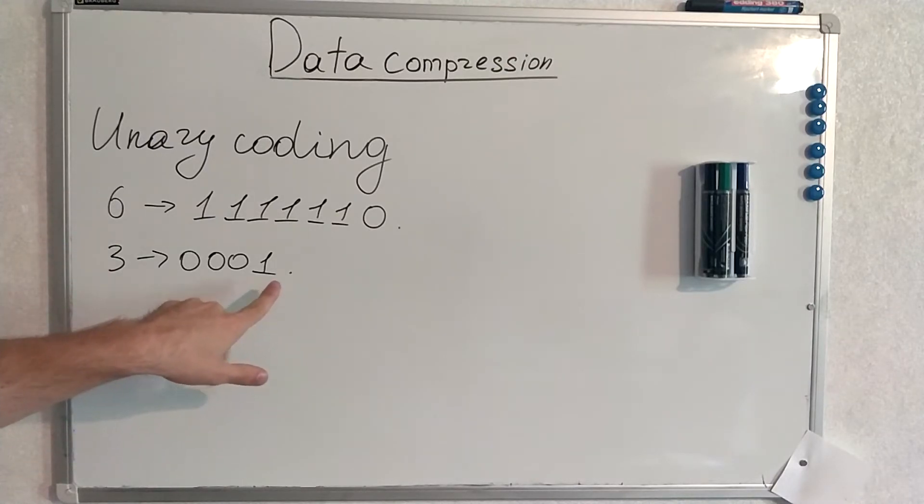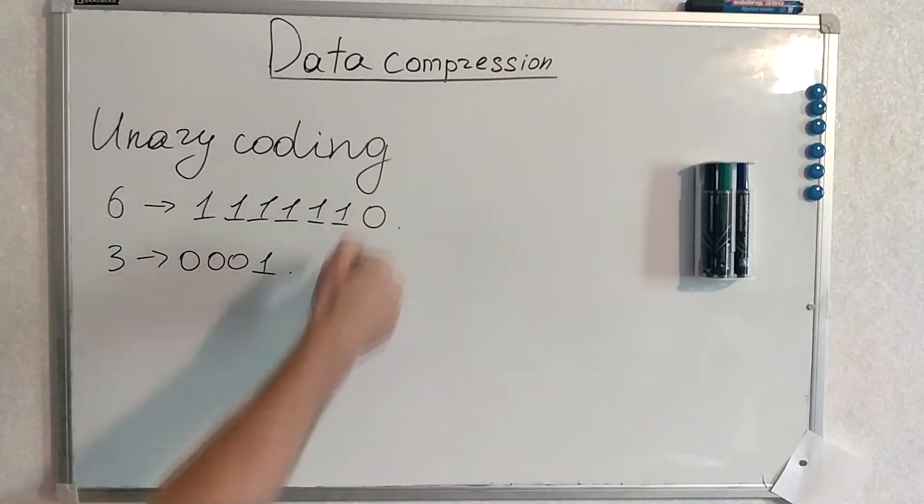And to end the code stream at the end you additionally concatenate the sequence with one or with zero, with another number. Like three, three zeros, six, six ones. At the end here is zero, at the end here is one.